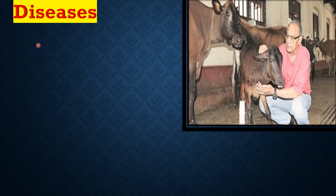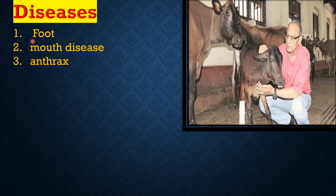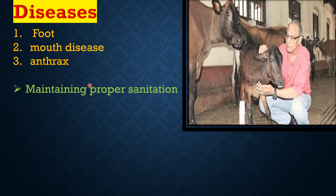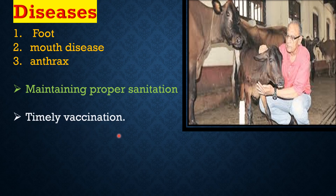Common cattle diseases include foot and mouth disease and anthrax. Prevention includes proper water, proper sanitation and timely vaccination.